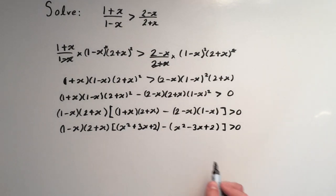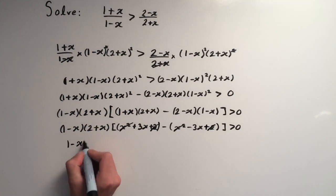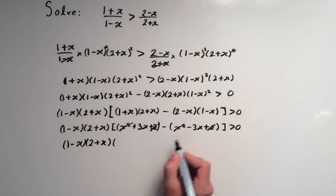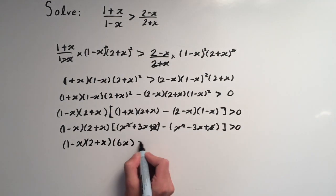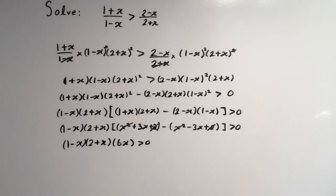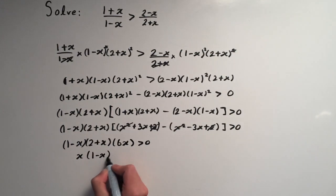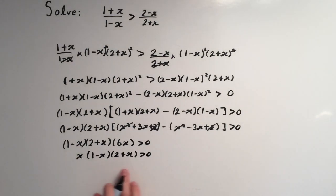When we subtract these two brackets, the x² terms cancel and the 2s cancel. We're left with (1-x)(2+x)(3x+3x), which gives 6x, all greater than zero. Dividing by 6 doesn't change anything, so we're left with x(1-x)(2+x) > 0.